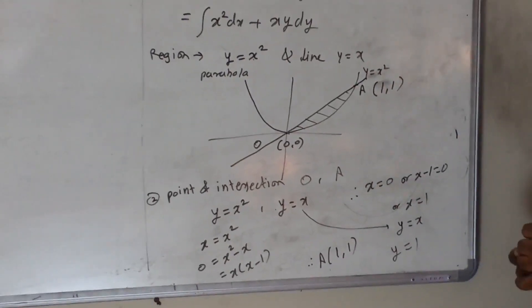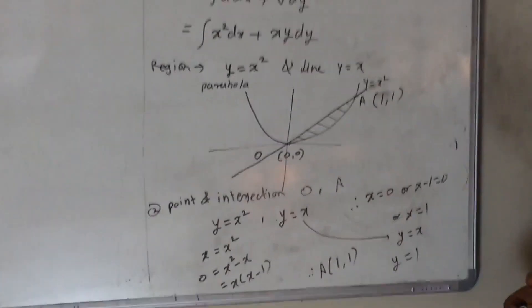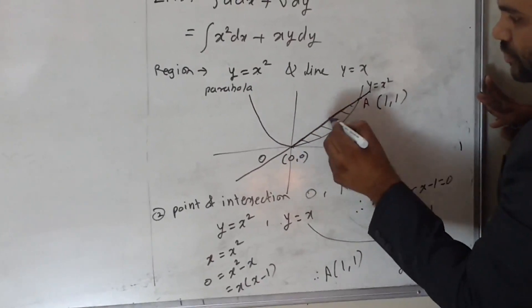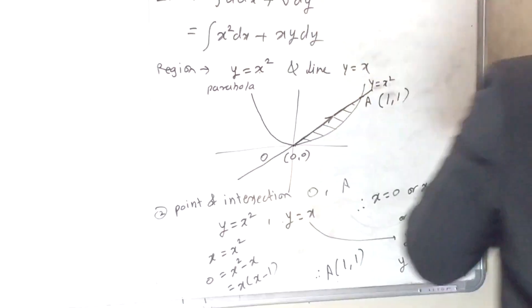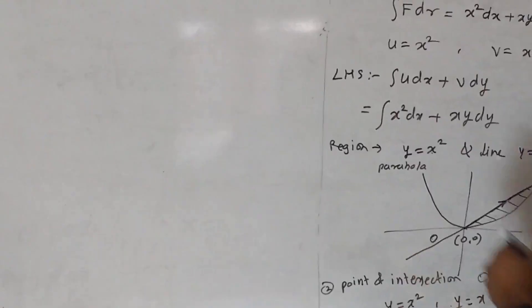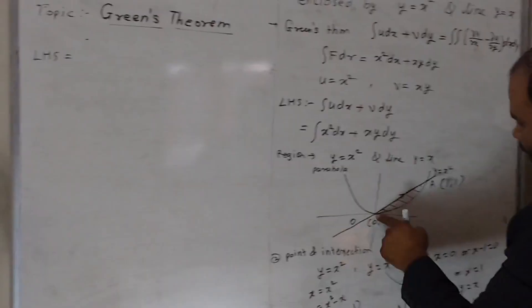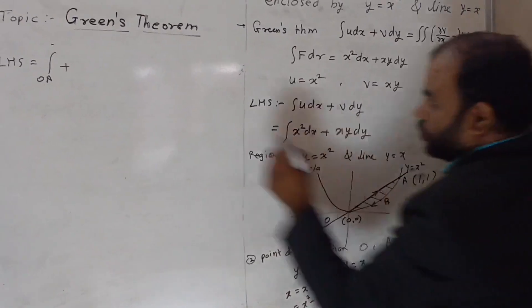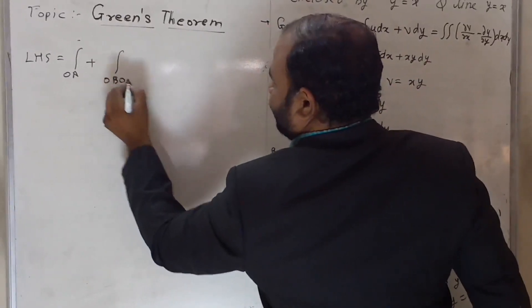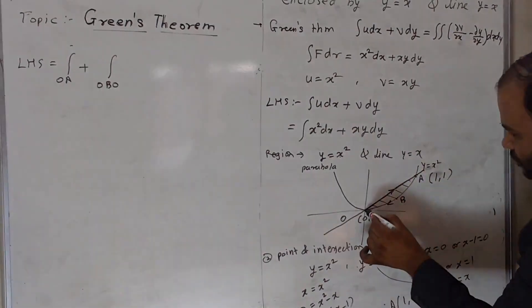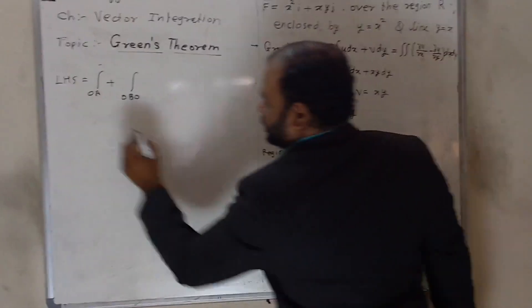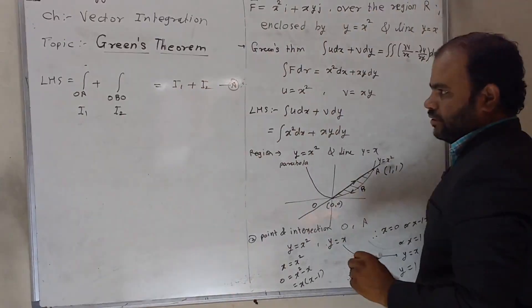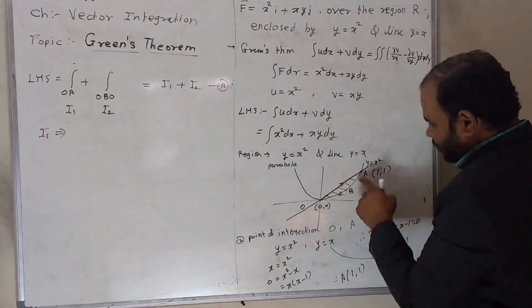So point A is (1, 1). Now we have to solve the single integration, which means we start from point O. The LHS equals the integral from O to A plus the integral from A back to O — call these I₁ and I₂ respectively, so LHS = I₁ + I₂. Let us solve I₁ first: I₁ is the integration only along the line from O to A.